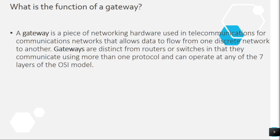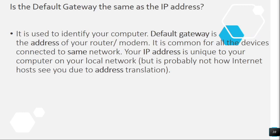Question 8: What is the function of a gateway? A gateway is a piece of networking hardware used in telecommunications for communications networks that allows data to flow from one discrete network to another. Gateways are distinct from routers or switches in that they communicate using more than one protocol and can operate at any of the seven layers of the OSI model.